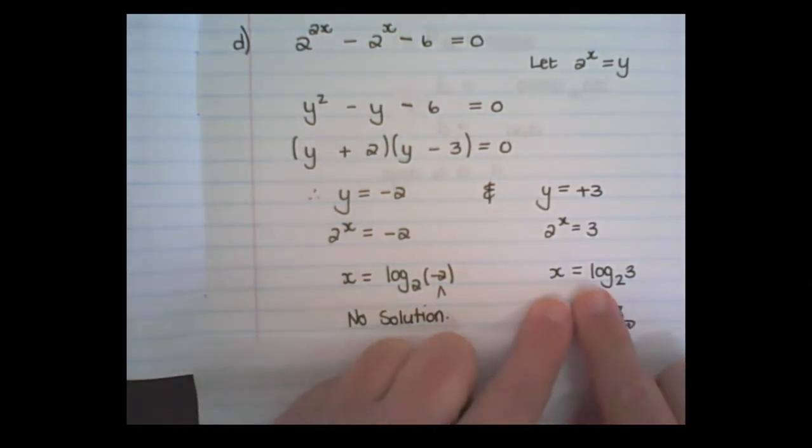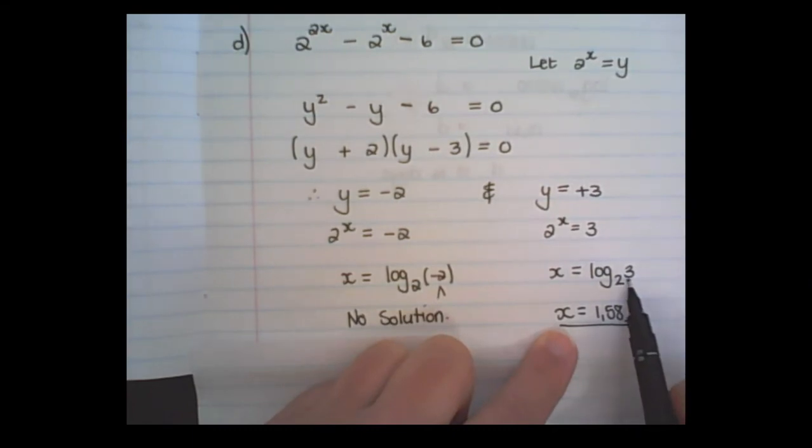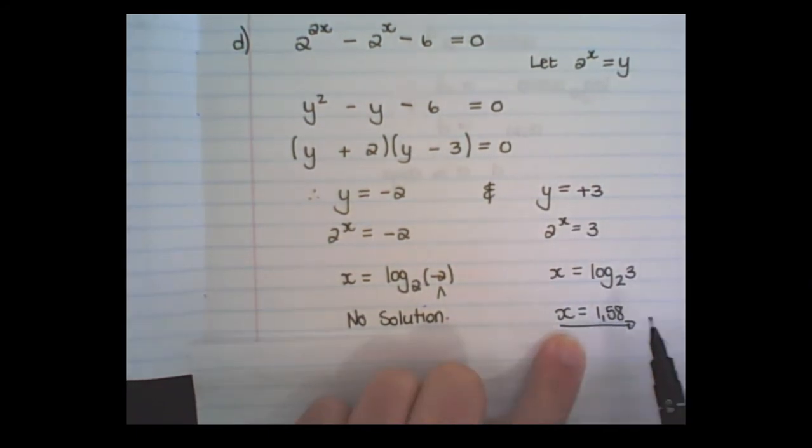On the other side, I have x is equal to log for base 2 and argument 3. This value is positive, and the argument is positive, so I know this log would exist. And I put it into the calculator, and x is equal to 1.58.